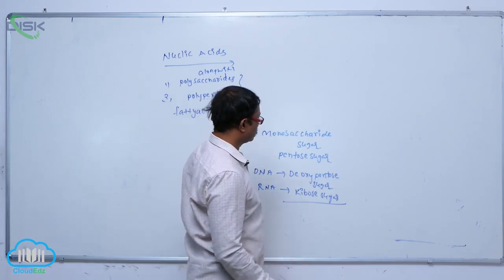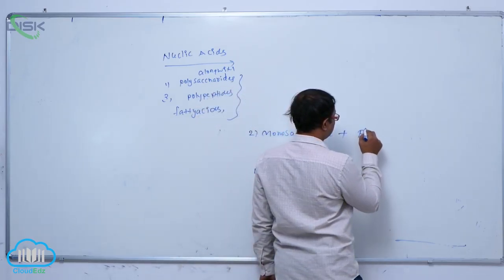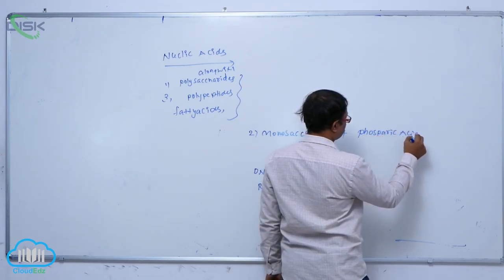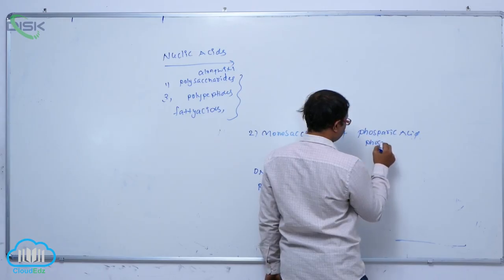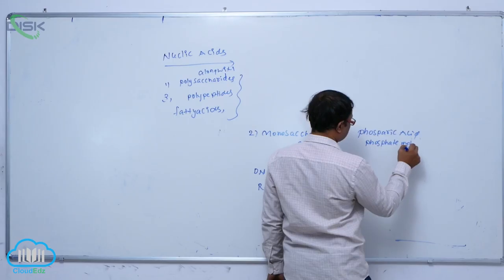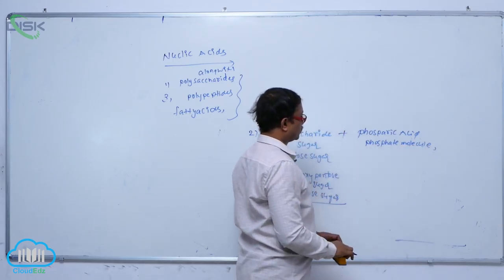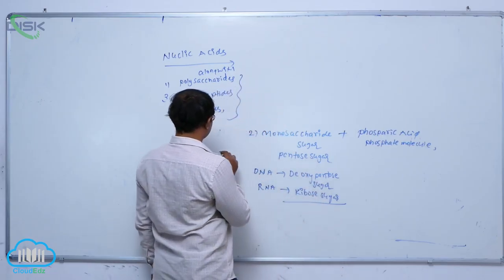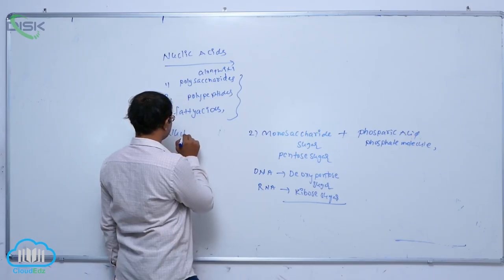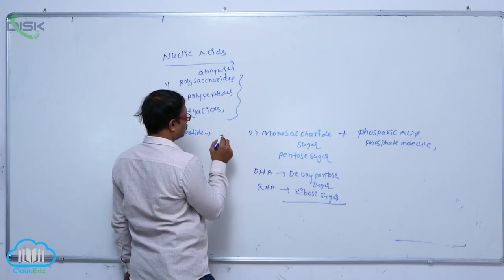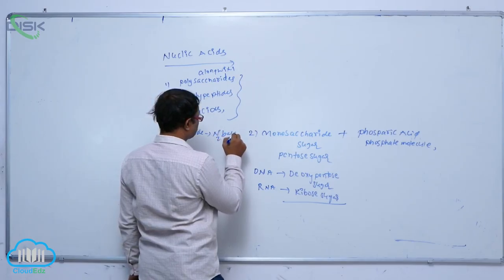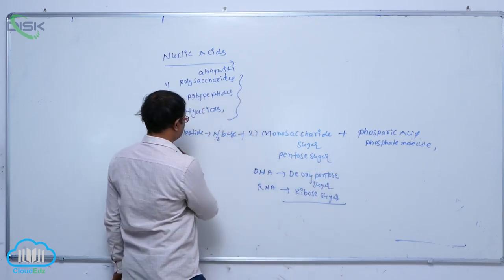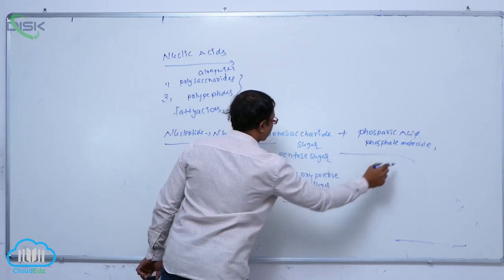The third component is phosphoric acid, which biologically is known as a phosphate molecule. So totally, a nucleotide consists of a nitrogen base, monosaccharide sugar (pentose sugar), plus phosphoric acid — that is known as a nucleotide.